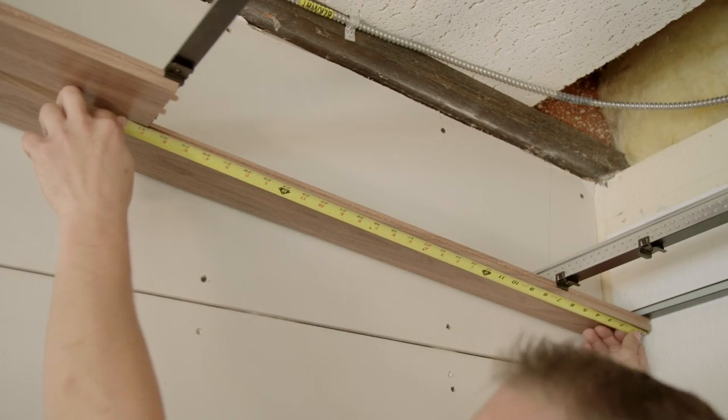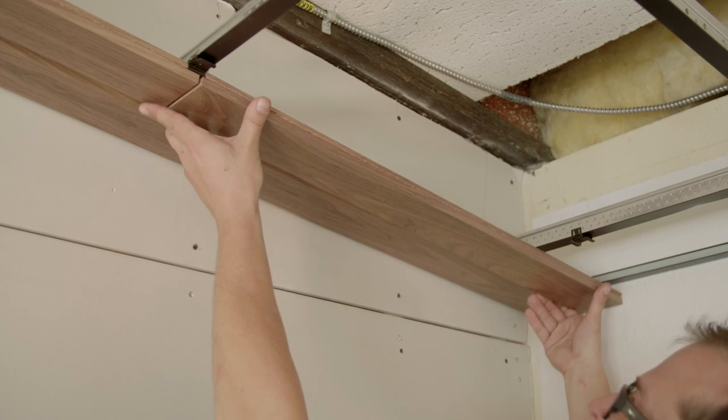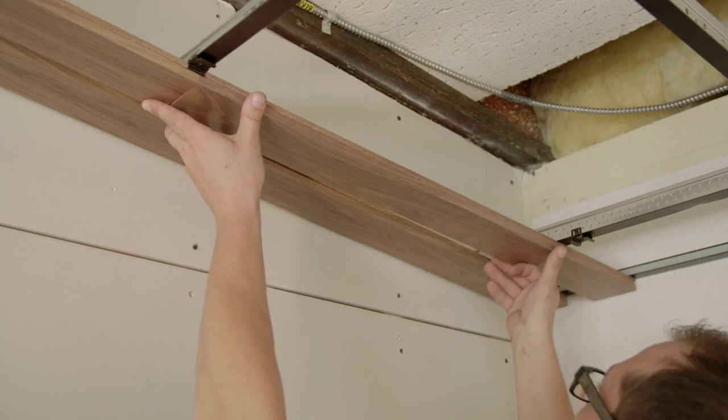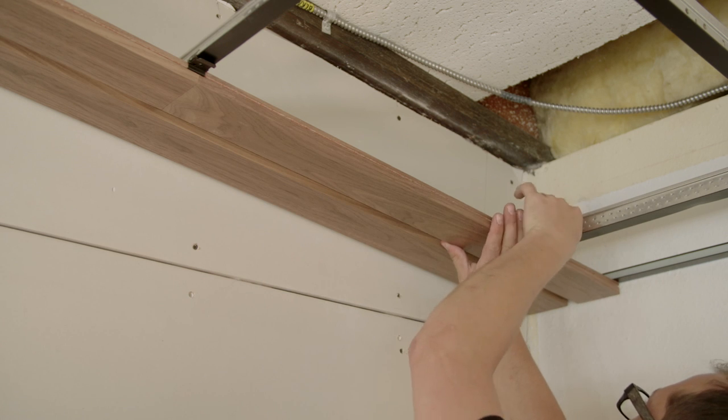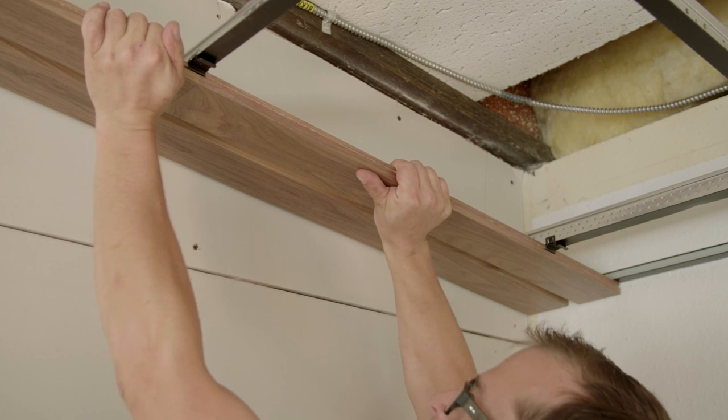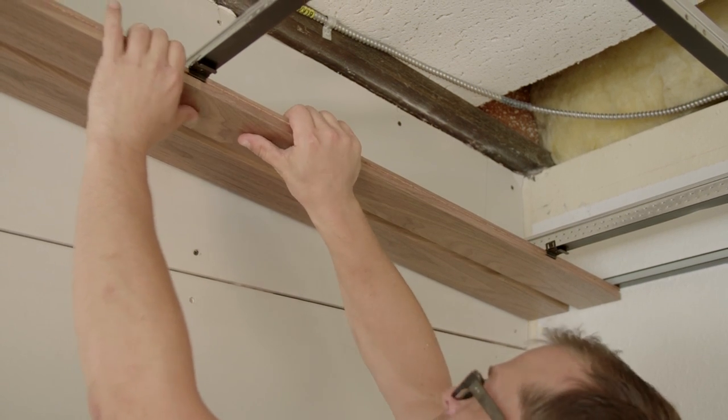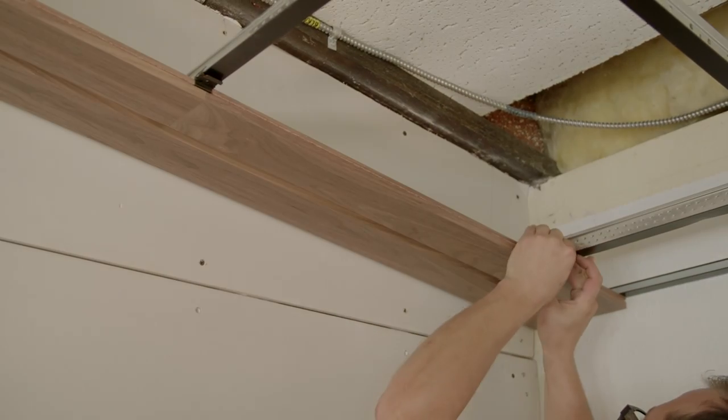Measure the end plank, allowing for the end gap. Then cut the plank at the appropriate angle, place it for the correct expansion gap, and slide the clips in place. Be sure to check that the dowel joint is tight before squeezing the end clips in position.